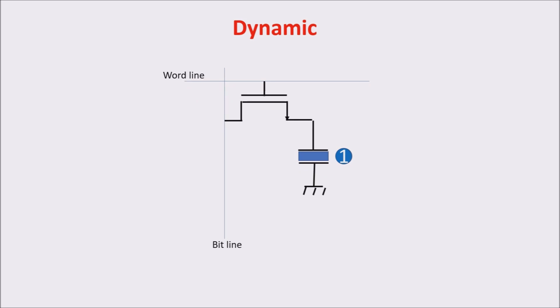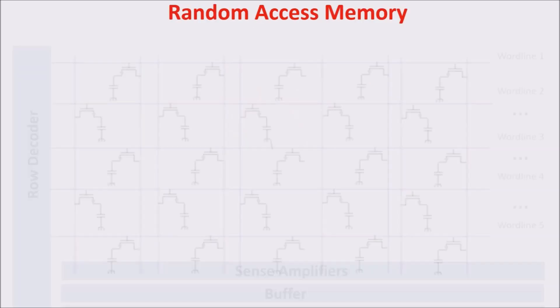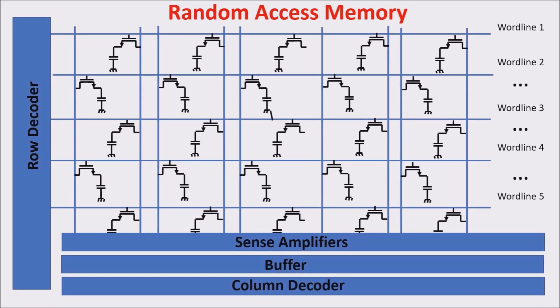Dynamic because it has to be dynamically refreshed. The memory cell is composed of a capacitor and a pass transistor. In the reading operation the pass transistor is ON and the charge flows through it in the bit line where a sense amplifier reads it. This is a destructive reading because at the end we don't have a charge in the capacitor, so we lose the one stored. In addition, the transistor allows the passage of leakage currents, so the charge has to be periodically refreshed — this is why it is called DRAM or dynamic RAM. Random access because acting on the row and column decoders we can access every cell in a random way and not in a sequential one.